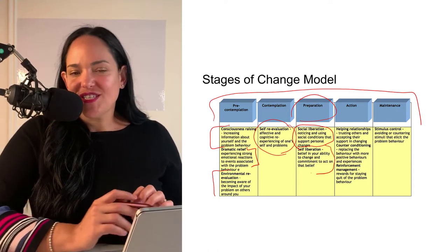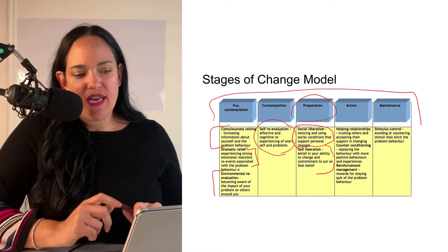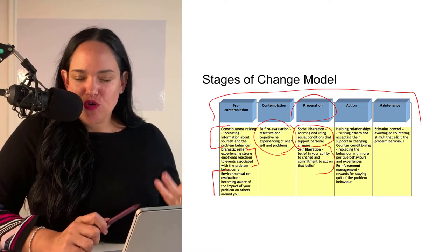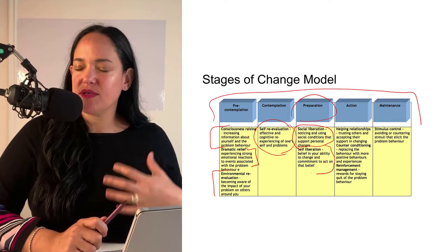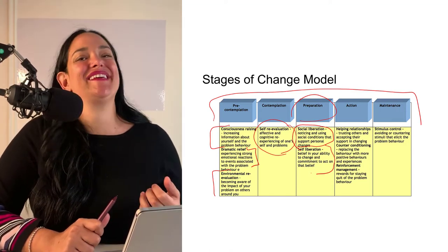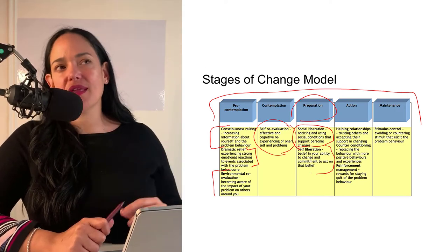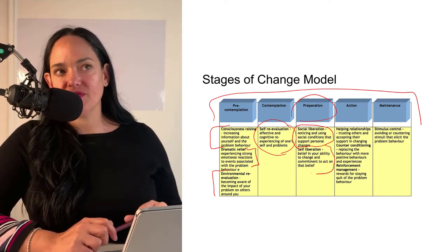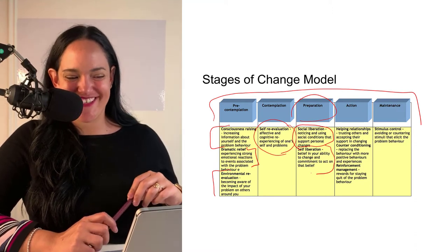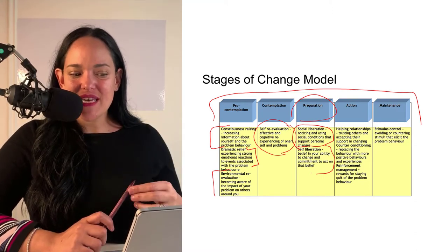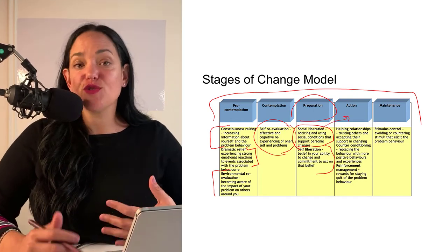Self-liberation is that last little extra to kind of get them to the next phase — building up self-efficacy. Affirmations can work here, mirror work too, where you look in the mirror and say, 'I am capable of doing this,' speaking to your own consciousness. These things can help get people into the stage of action.